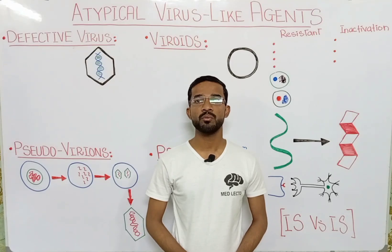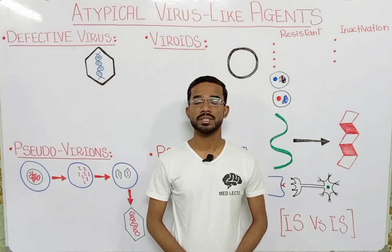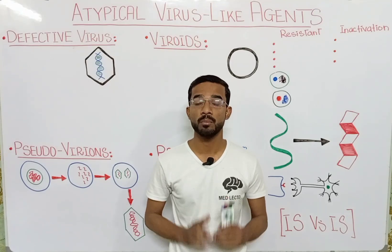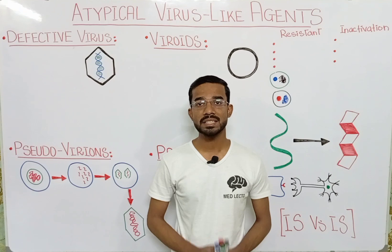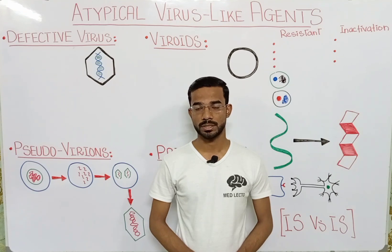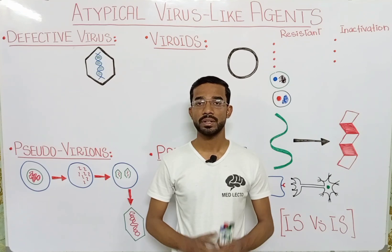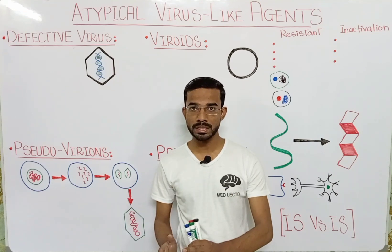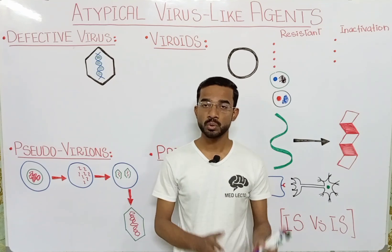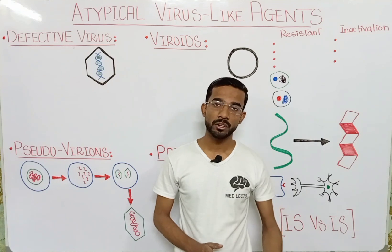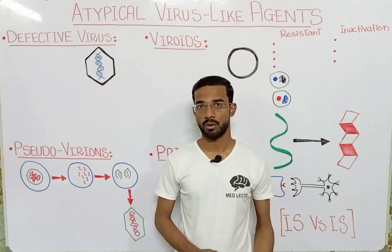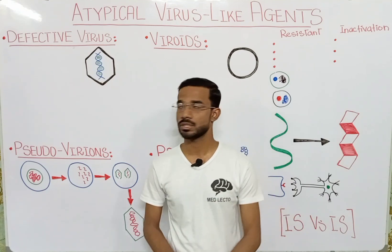Welcome to Matilecto. Today we are going to discuss four most important virus-like agents: defective virus, pseudovirus, viroids, and prions.